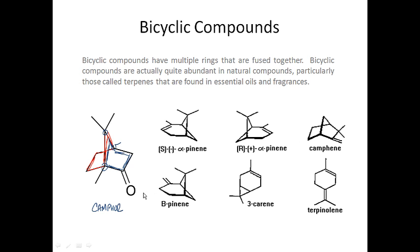Camphor is found in pine needles, and there's a certain type of cinnamon that has a little bit of camphor in it that differentiates it from other types of cinnamons. There are pinenes that have a five-membered ring fused to a six-membered ring — alpha pinene and beta pinene. Camphene is related to camphor, and there's another molecule called borneol and isoborneol where the carbonyl group has been reduced down to an alcohol.